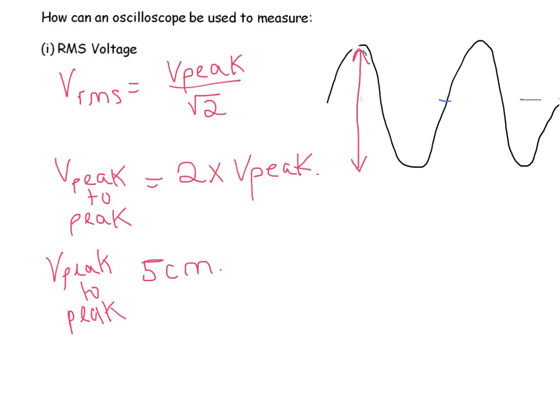So what an oscilloscope has is something called gain. You can set these on an oscilloscope, you can change it to different levels. But from that you can work out or set the volts per centimetre for instance. So a typical one might be 20 volts per centimetre, it could be lower, it could be greater.